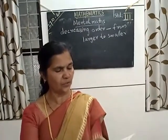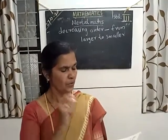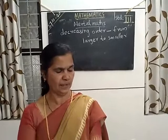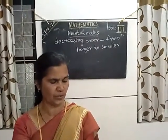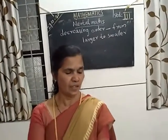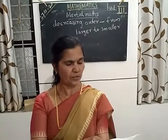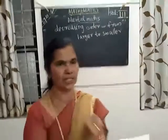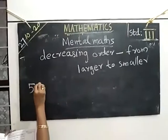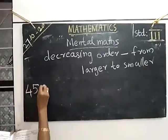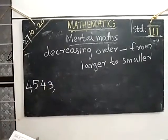Then you look at the hundreds place: 300, 400, 500, 500. Then you look at the tens place — 543 and 534. Which is larger? 4,543 is larger. We start from that number. 4,543 is the largest number.